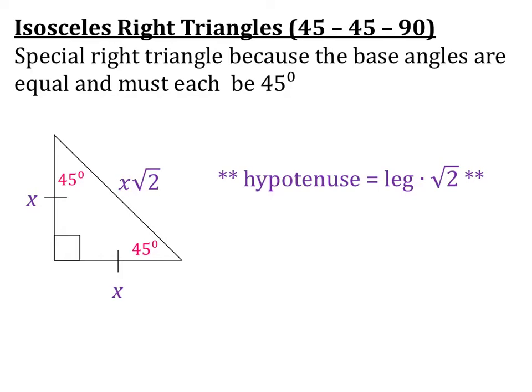So their sides also have a special relationship based on the Pythagorean Theorem. They will always have the relationship as your two legs, so in this case x and x, and then your hypotenuse will be x root 2.